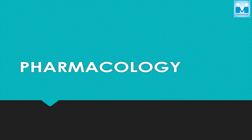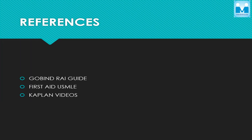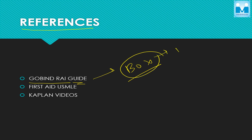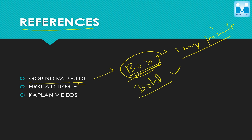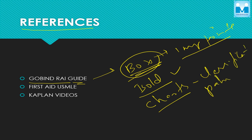Hello everyone, today we are going to discuss the important topics in pharmacology. First, let's discuss reference books. For a guide, I would recommend Govindrai. In this one, you have to read A to Z — in every page, in one corner, there would be boxes mentioning the important points. You have to read those boxes, anything written in bold, and the charts, classifications, or pathways.